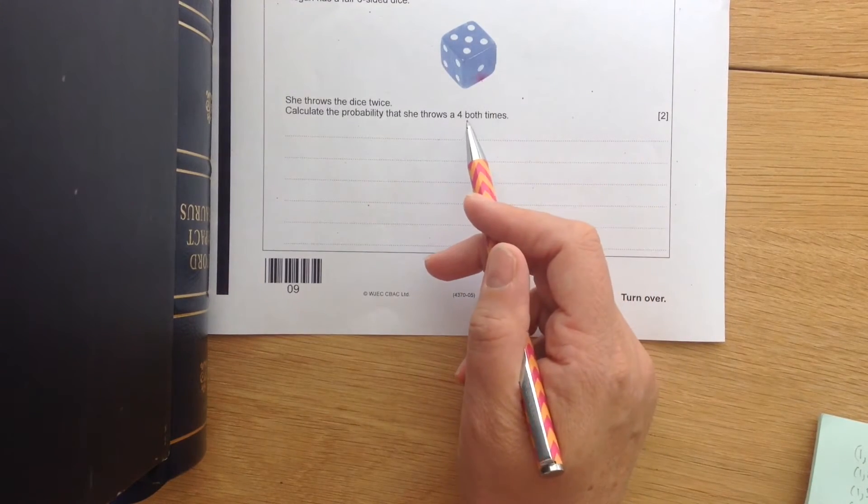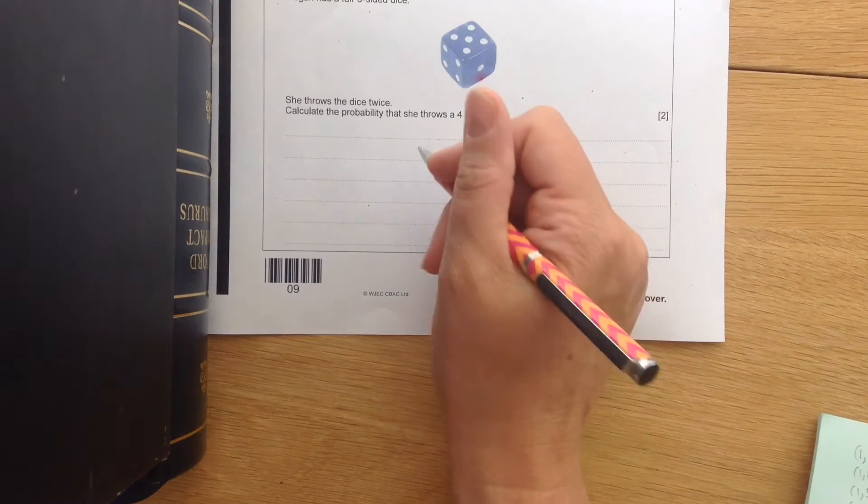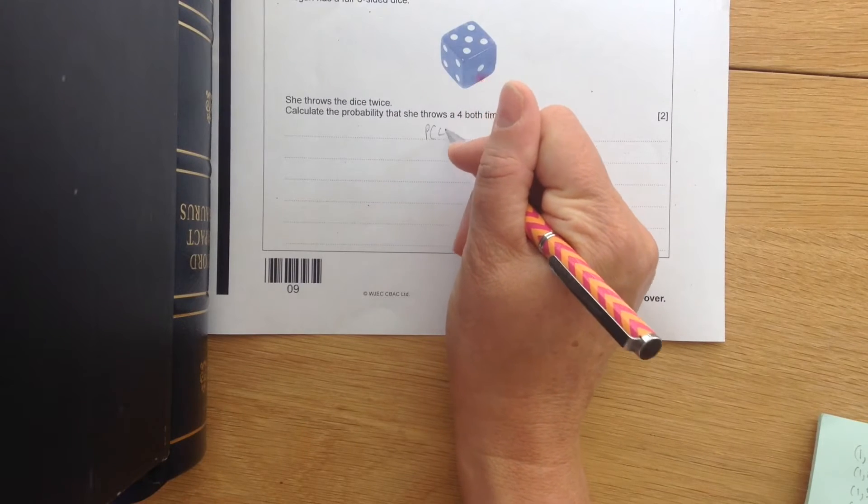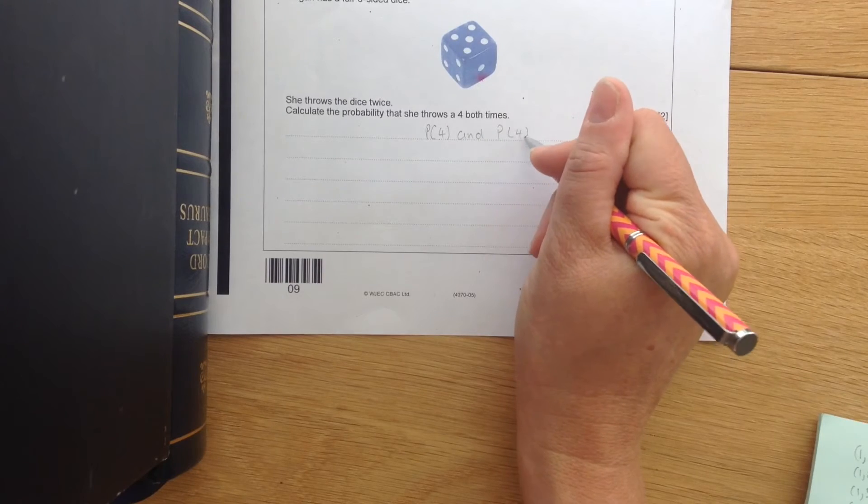Okay, so we're looking at Megan getting a four and a four. So we're looking at the probability of a four and then her getting another four.